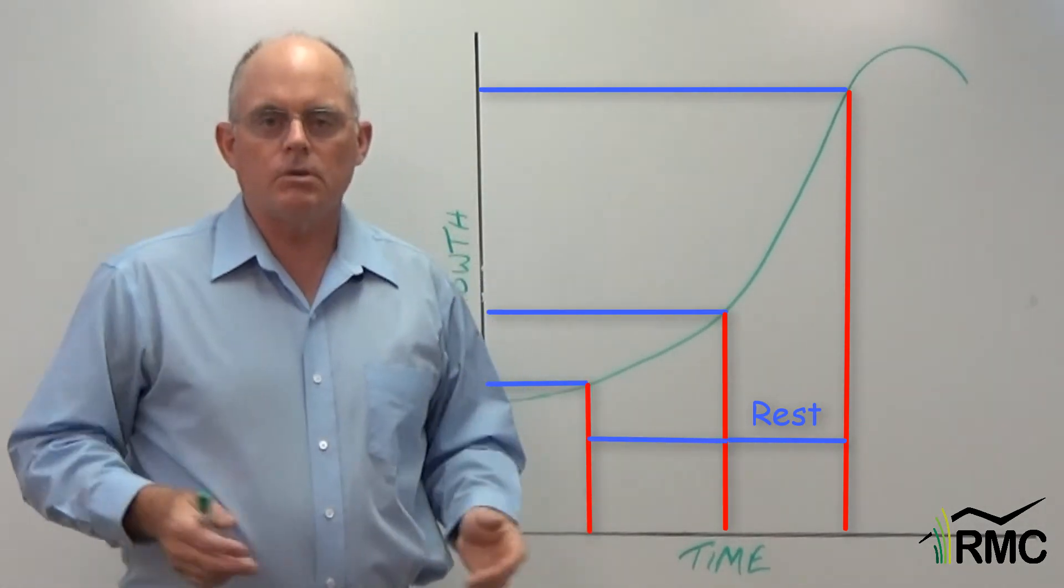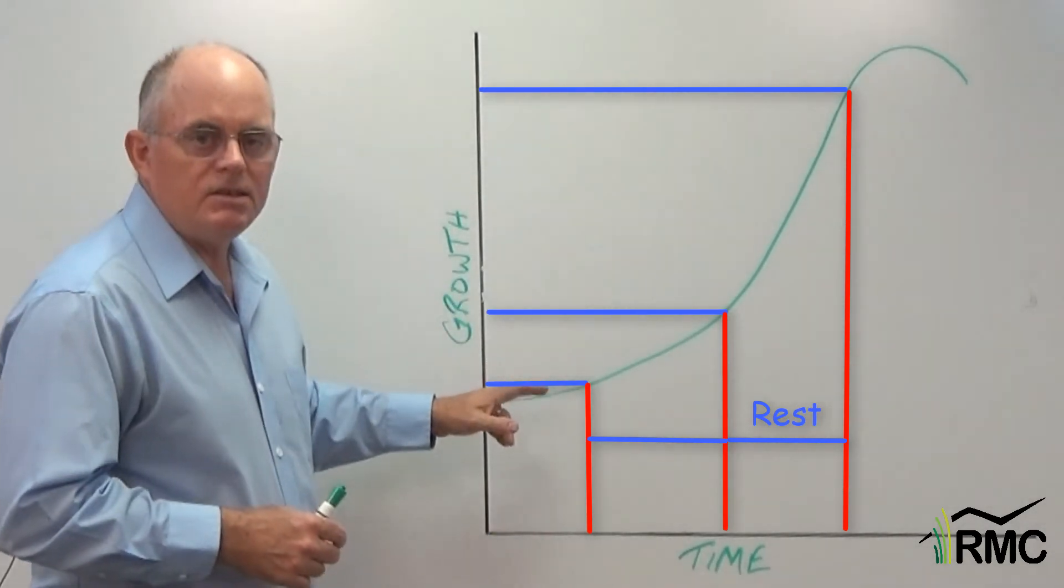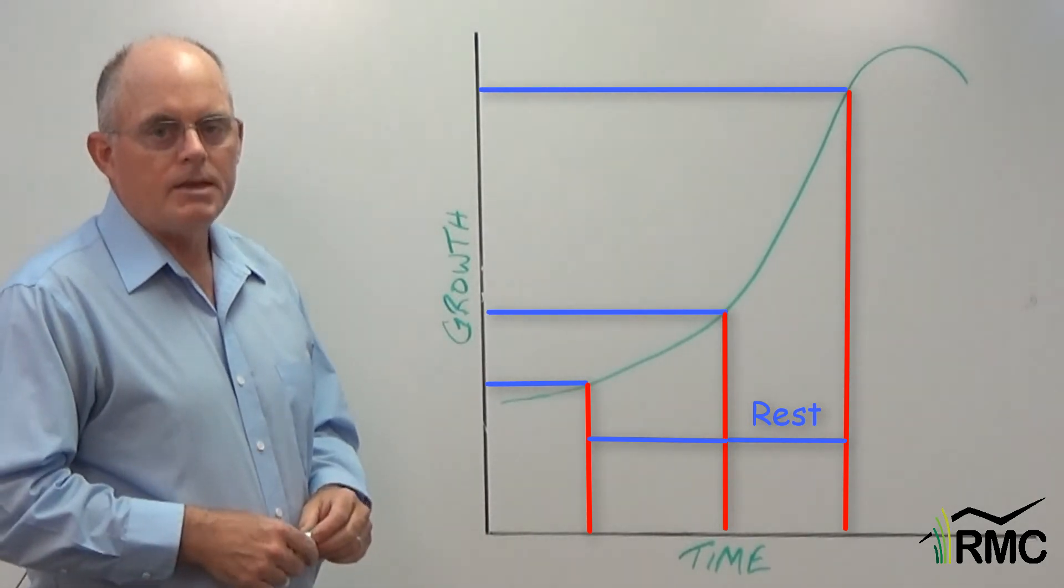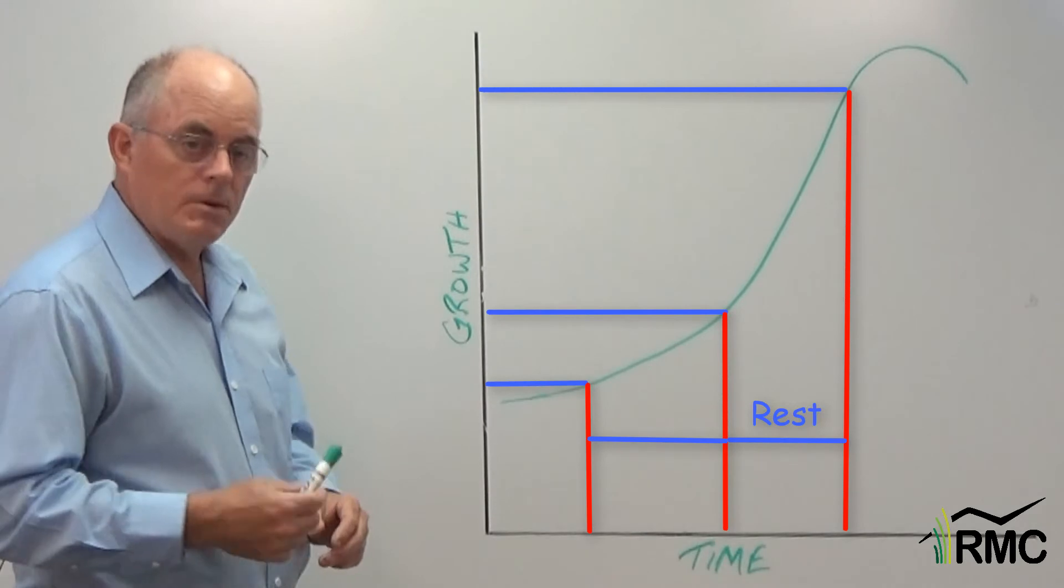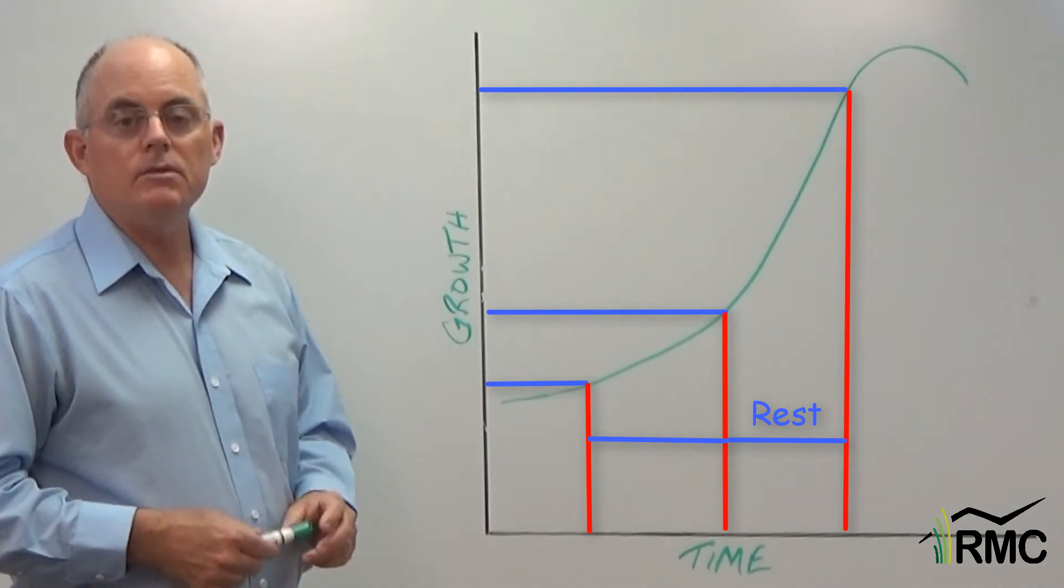Now what happened to the recovery period? Grazing 25 percent more severely didn't increase the rest we needed by 25 percent did it? It increased it by more. A lot more. 50 percent, 75 percent, it might even double it, maybe even more.